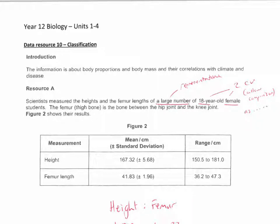In this data task about classification, we start off with 18-year-old females, a large number. We measure the height and the femur length. So a couple of things we notice here: if you've got an evaluation question using this resource, a large number means it's a representative sample, and we've controlled two variables—we've got 18-year-olds and we've got females.